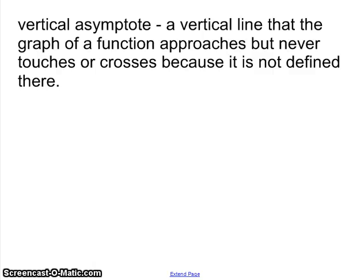Alright, so we've got a definition of a vertical asymptote: a vertical line that the graph of a function approaches but never touches or crosses because it is not defined there.